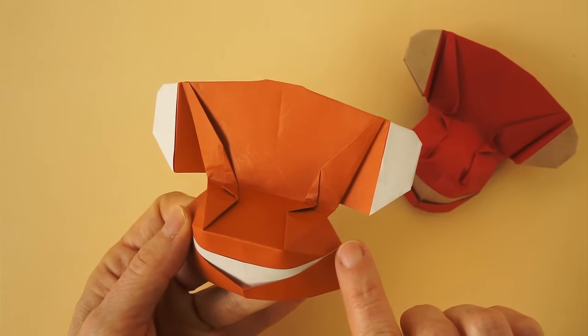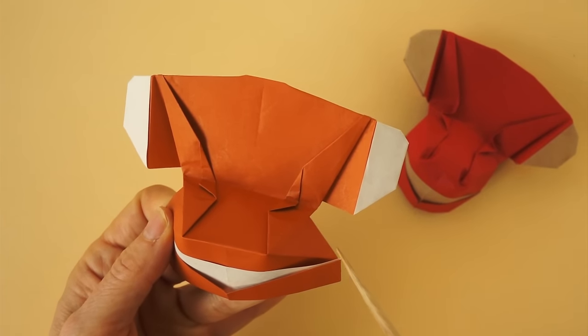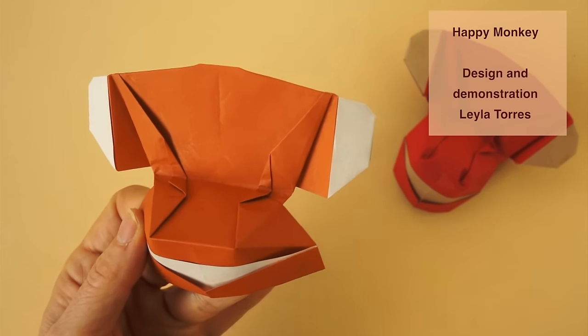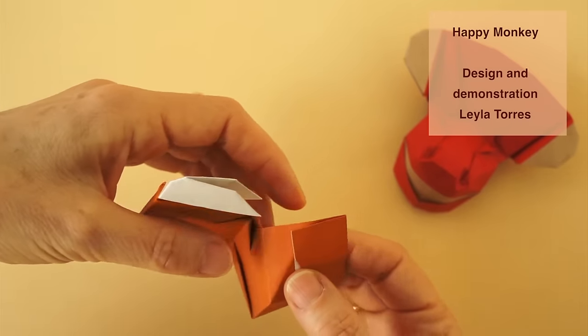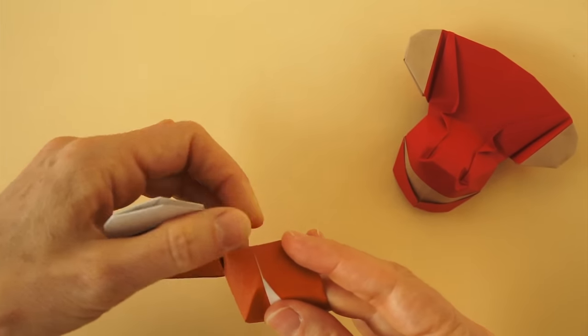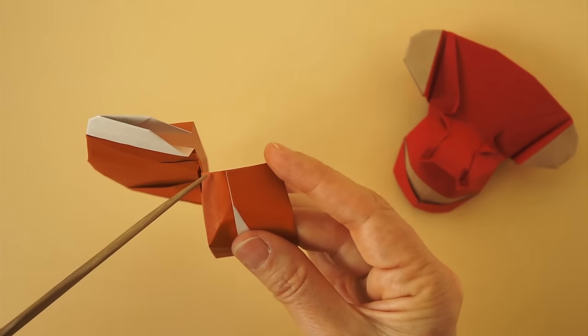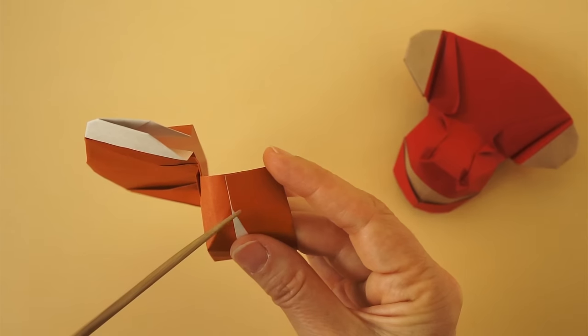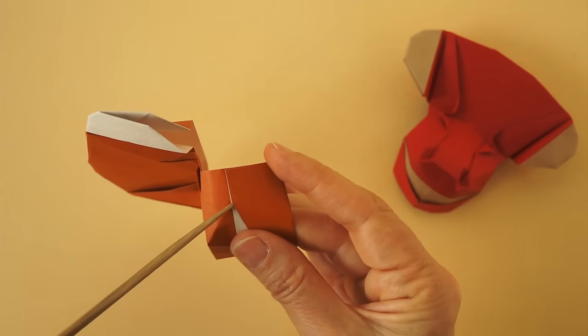We just need to finish by making one fold here, it's a mountain fold. We can rotate a little bit, and we can fold from here to here, just passing at the corner of the mouth.